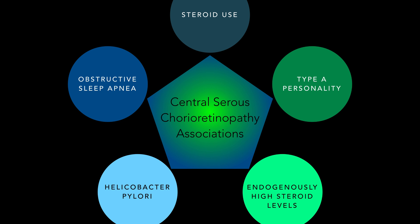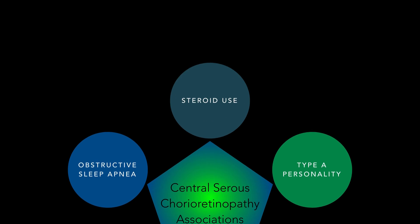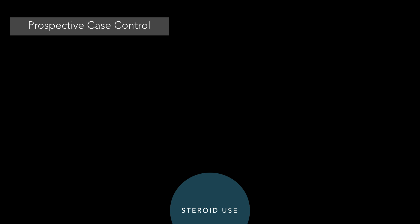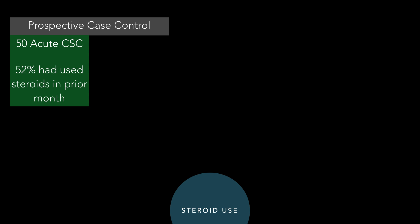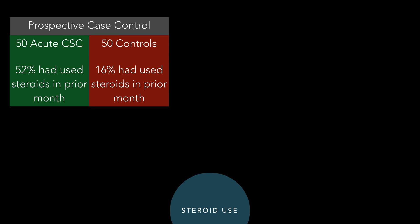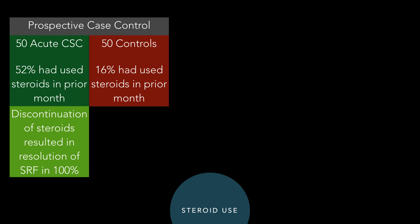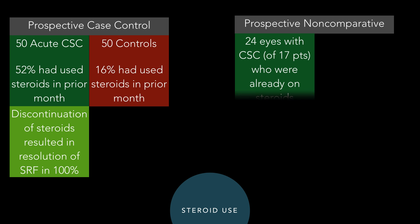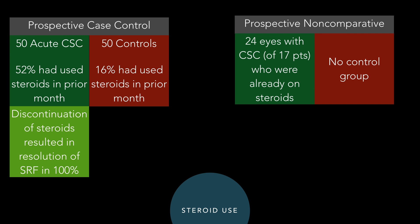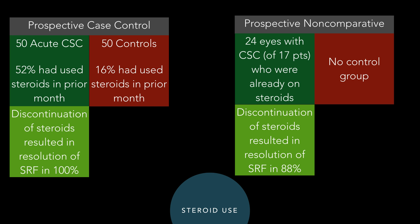I've grouped the associations into five. The first is steroid use, which I think is one of the most important. Carvalho, Recchia, and others performed a case-control prospective study with 50 CSC patients and 50 controls. They found 52% of CSC patients had used steroids in the prior month versus only 16% of controls. They stopped all steroids in the CSC patients, and 100% had resolution of their subretinal fluid. Another study by Sharma — a non-comparative prospective study of 24 eyes — stopped steroids and found 88% had resolution. Take-home message: if you can stop steroids, please do. It might result in complete resolution.